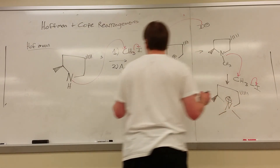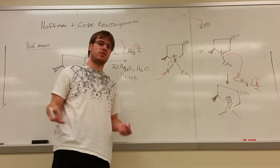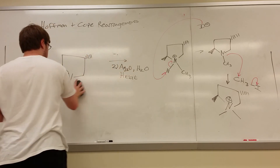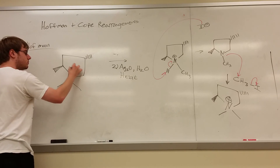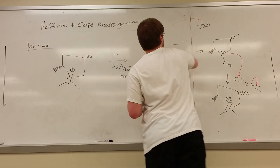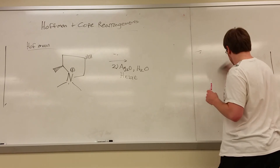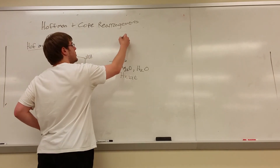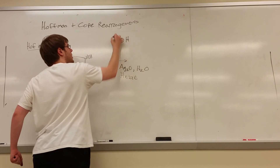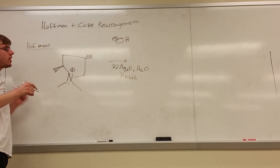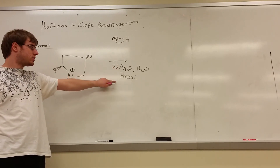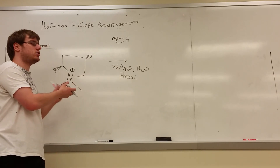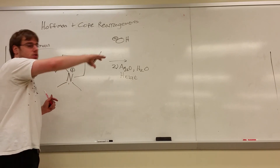Once that nitrogen has all the carbons it can hold, that's when step two starts. Ag₂O and H₂O — when you see Ag₂O and H₂O, all you have to think of is OH⁻, because that's what it makes. One thing I should point out: heat is absolutely necessary for this reaction. If they don't tell you heat, you stop here, even if they give you step two Ag₂O, H₂O. You need that heat for the next thing to occur.